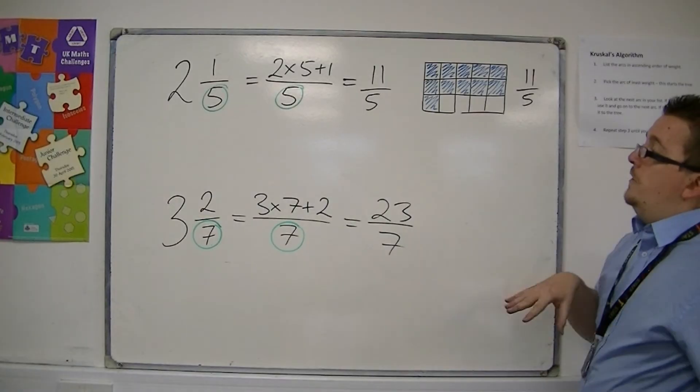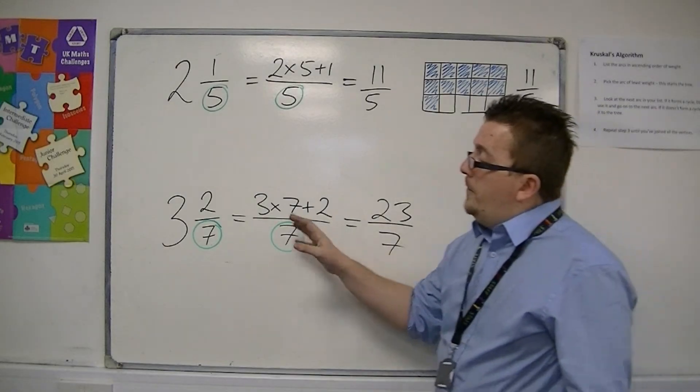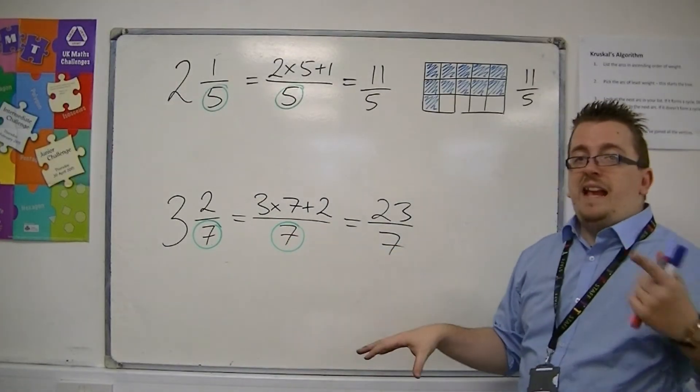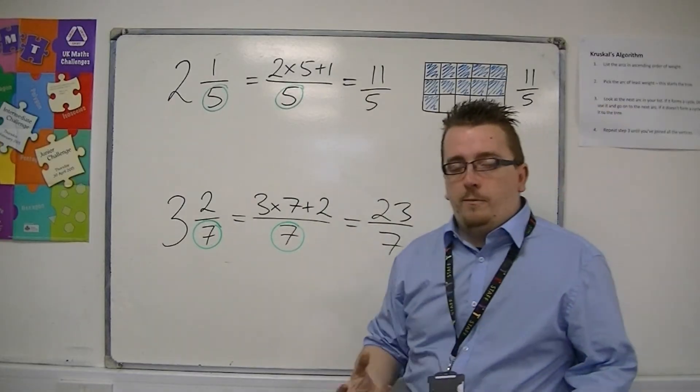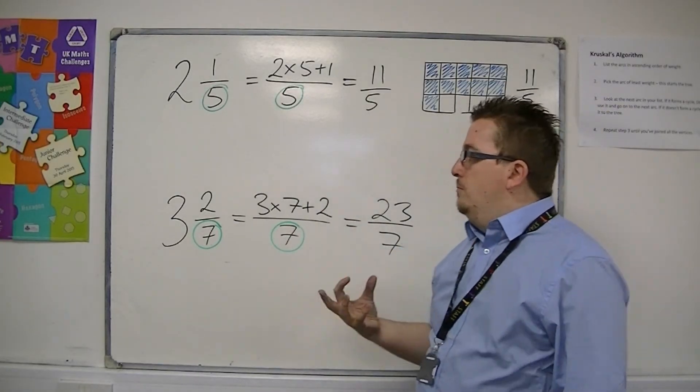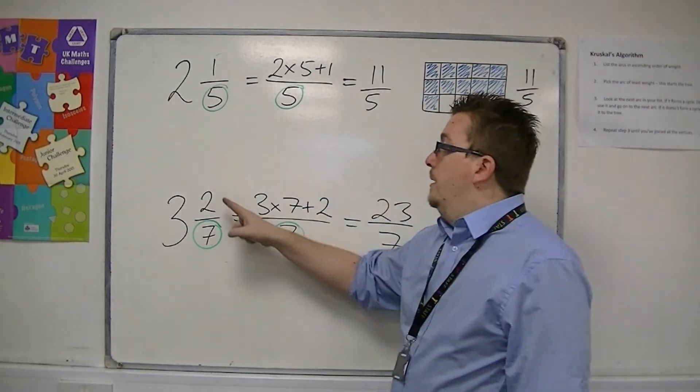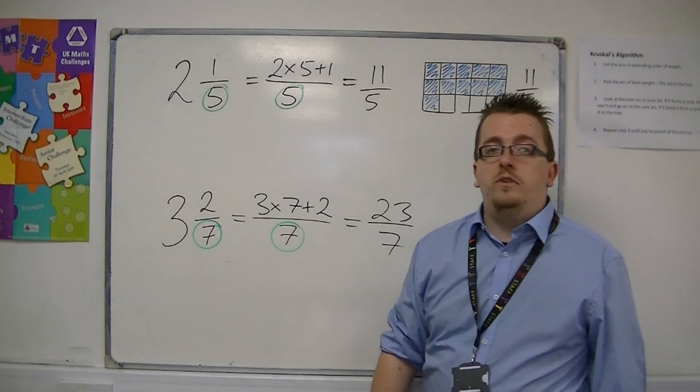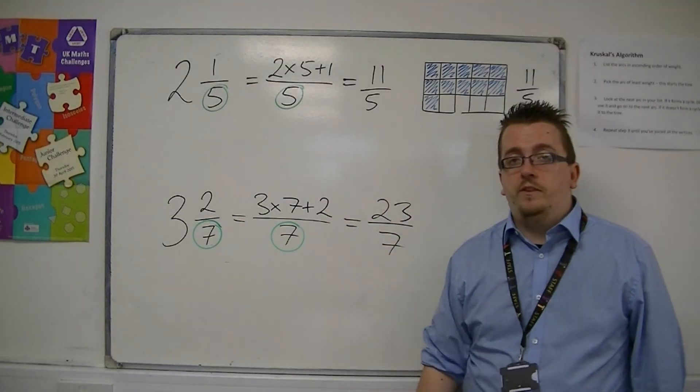So this is how you can turn a mixed number into an improper fraction. It's a little bit fiddly trying to remember exactly how the process works. But you can think about it as how many sevenths go into 3, and that's 21, plus the remaining 2 is 23. And that is another way of thinking about how you can do this process.